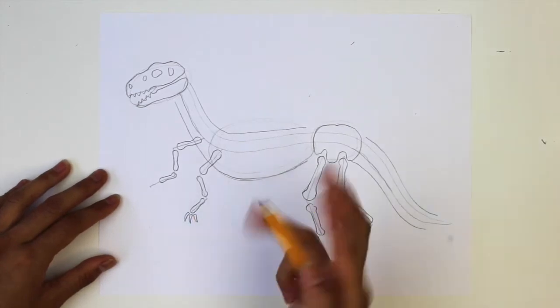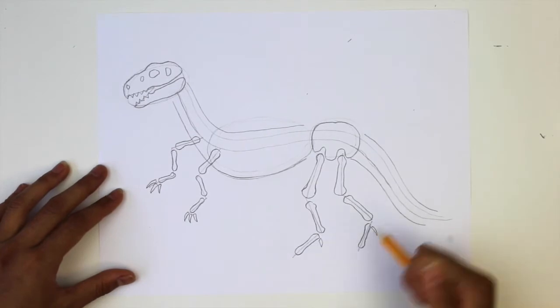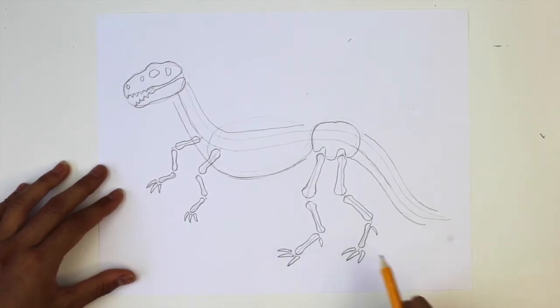Draw three curved triangle shapes for the claws. On the back feet, draw a hook on the top of the last section and three curved claws at the bottom.